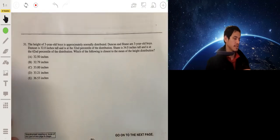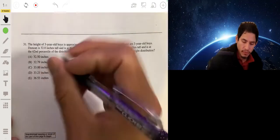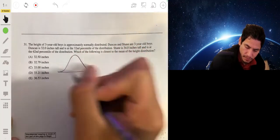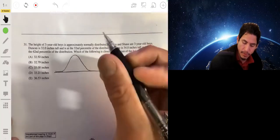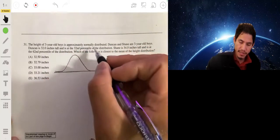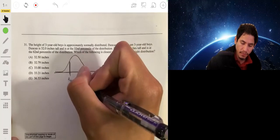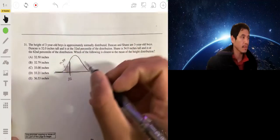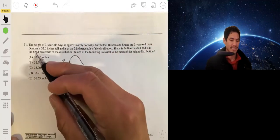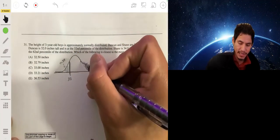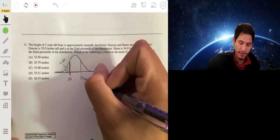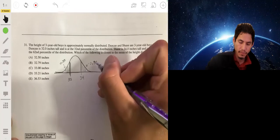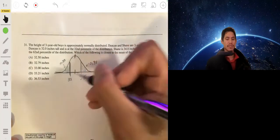Okay, so let's draw a sketch to get a sense of what's going on here. So a normal distribution. Duncan is 32 inches tall and at the 32nd percentile, that means that the area to the left of 32 is going to be 0.32. And then if Shane is 34 inches tall and at the 62nd percentile, that means there's 0.62 area to the left of the value of 34, or that means there's 1 minus 62 percent or 0.38 to the right.